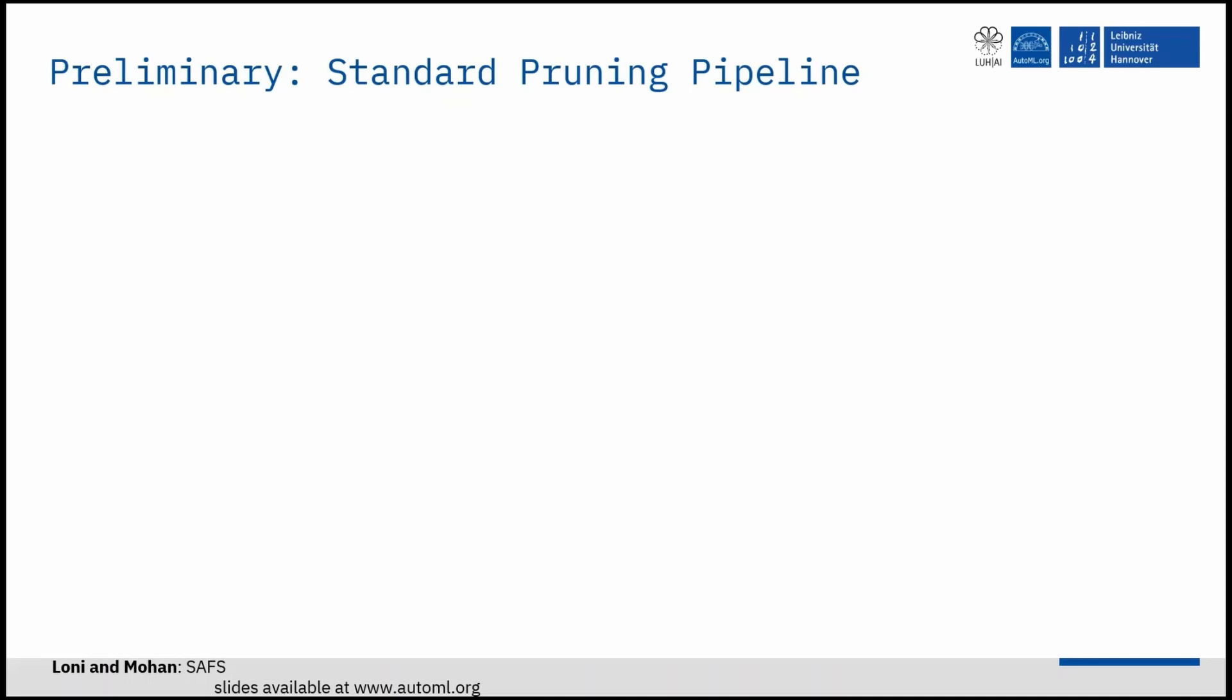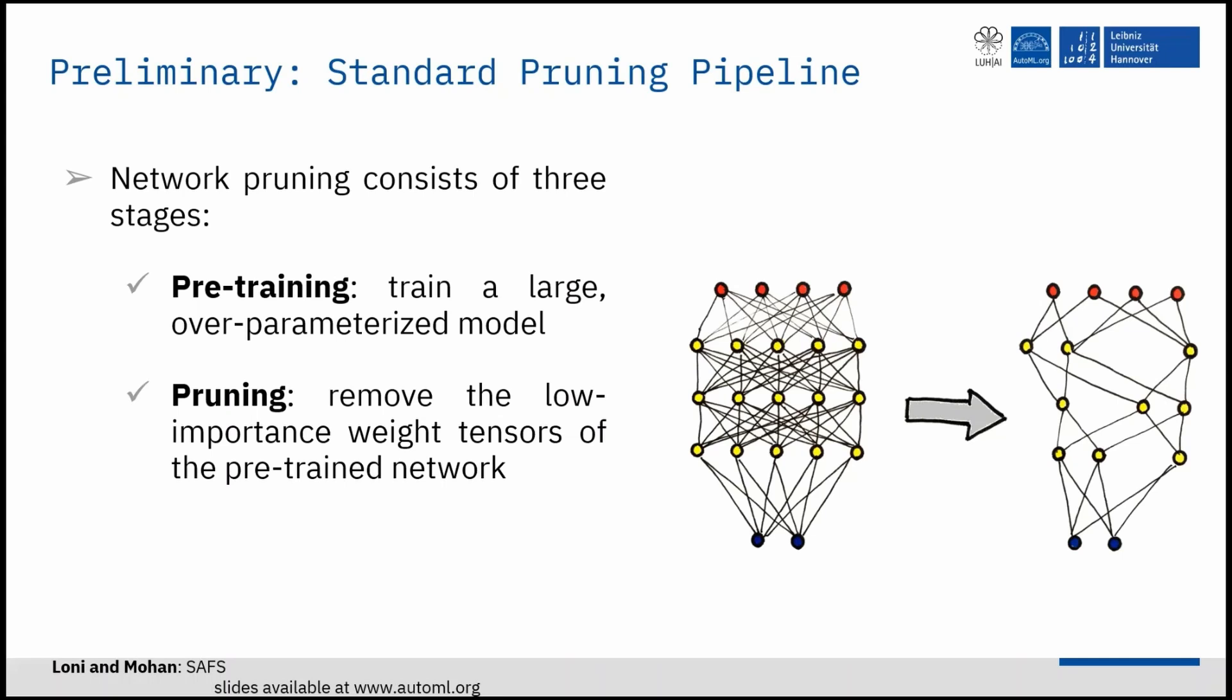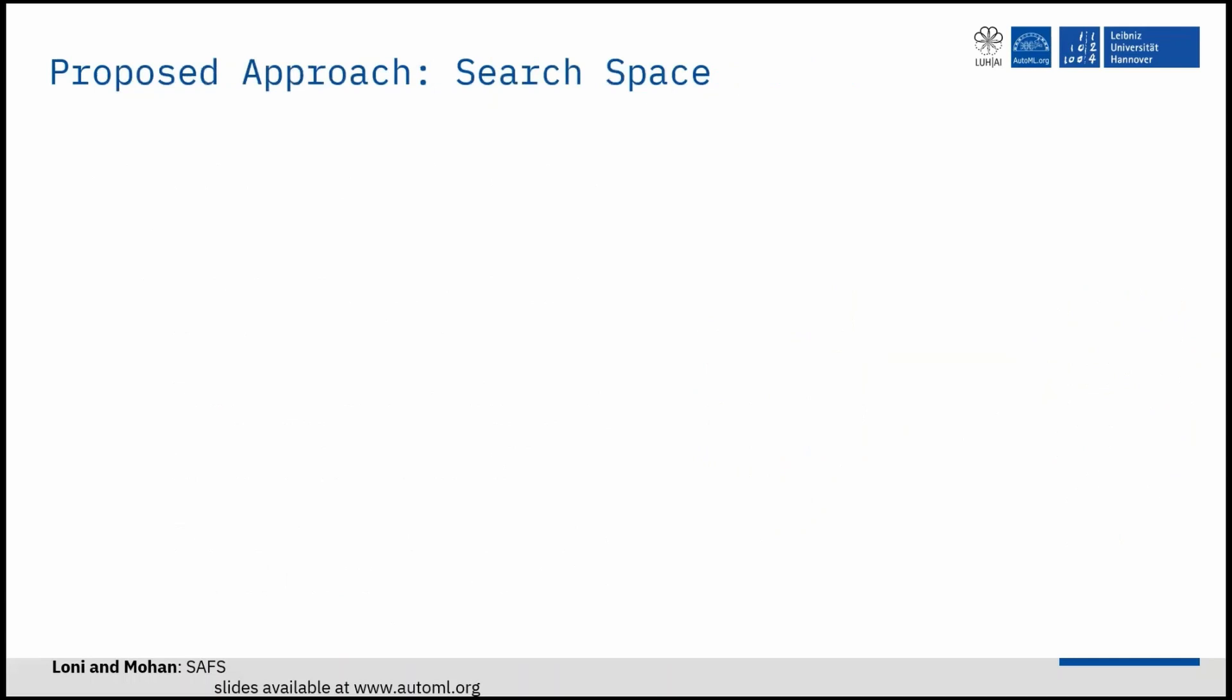Before going into details, we briefly present the standard pruning pipeline. Network pruning generally consists of three stages. First, pre-training a large over-parameterized network. Second, removing the low-importance weight tensors of the pre-trained network. And finally, retraining the pruned network to regain its original accuracy or fine-tuning step.